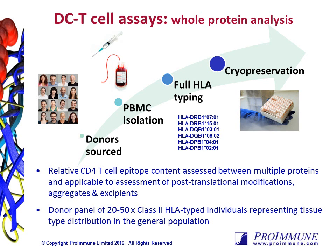Proimmune offers an integrated, best-in-class assay platform that allows you to evaluate the potential for immunogenicity risk specific to your program needs. For example, if there are multiple biologic candidates in the pipeline, the ProCern DC T-cell proliferation assay can be used to rank the candidates during the lead selection phase. The DC T-cell assay helps to identify the presence or absence of potential T-cell epitopes within proteins, and is designed to develop a picture of relative antigenicity between structurally similar molecules comparable in their application, formulation, mode of action, and route of exposure. It is a highly sensitive assay that can also be used to assess post-translational modifications, aggregates, and excipients.